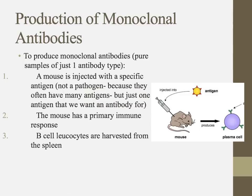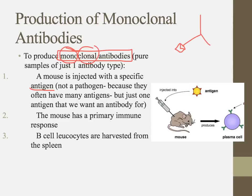To produce a monoclonal antibody — many copies of one particular type — here's the process. First, we inject a mouse with that specific antigen. Not a pathogen, because pathogens often have many antigens on their surface; we want one specific antigen to get one specific antibody.